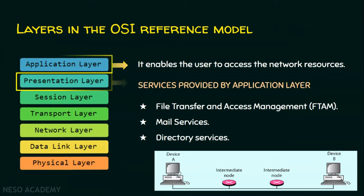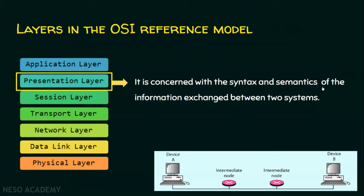Now we will move on to the presentation layer. It is concerned with the syntax and semantics of the information exchanged between two systems. Syntax means the structure or format of the message being sent — for example, if n bits are flowing, what do the first eight bits represent, and what does the second set of eight bits represent? Semantics means it refers to the meaning of each section. If the message has five sections, what is the meaning of each section? The meaning of each bit section being transmitted is addressed by the semantics part.